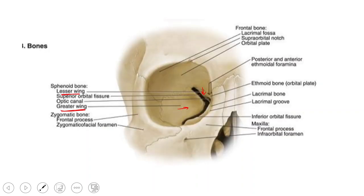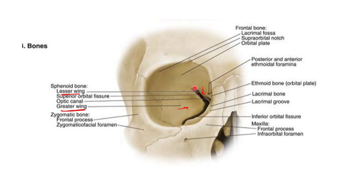To begin with the superior orbital fissure, we can see the right orbital cavity here where we can appreciate the fissure. The superior orbital fissure is located between the posterior part of the lateral wall of the orbit and the roof of the orbit.